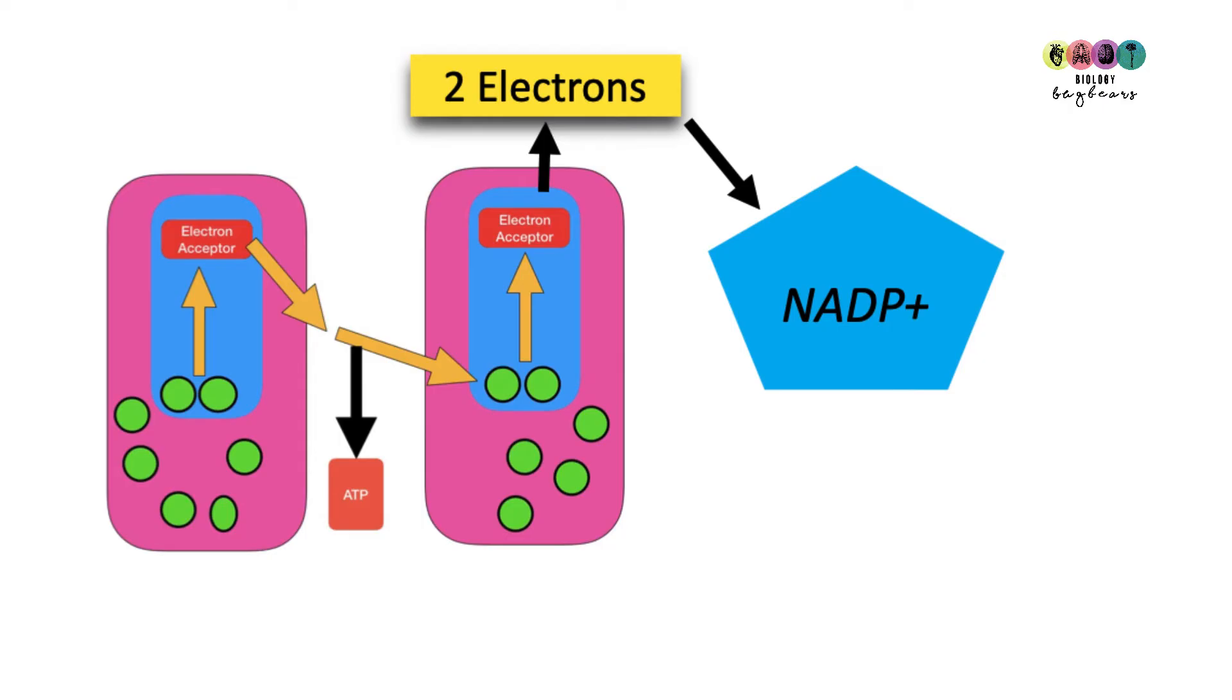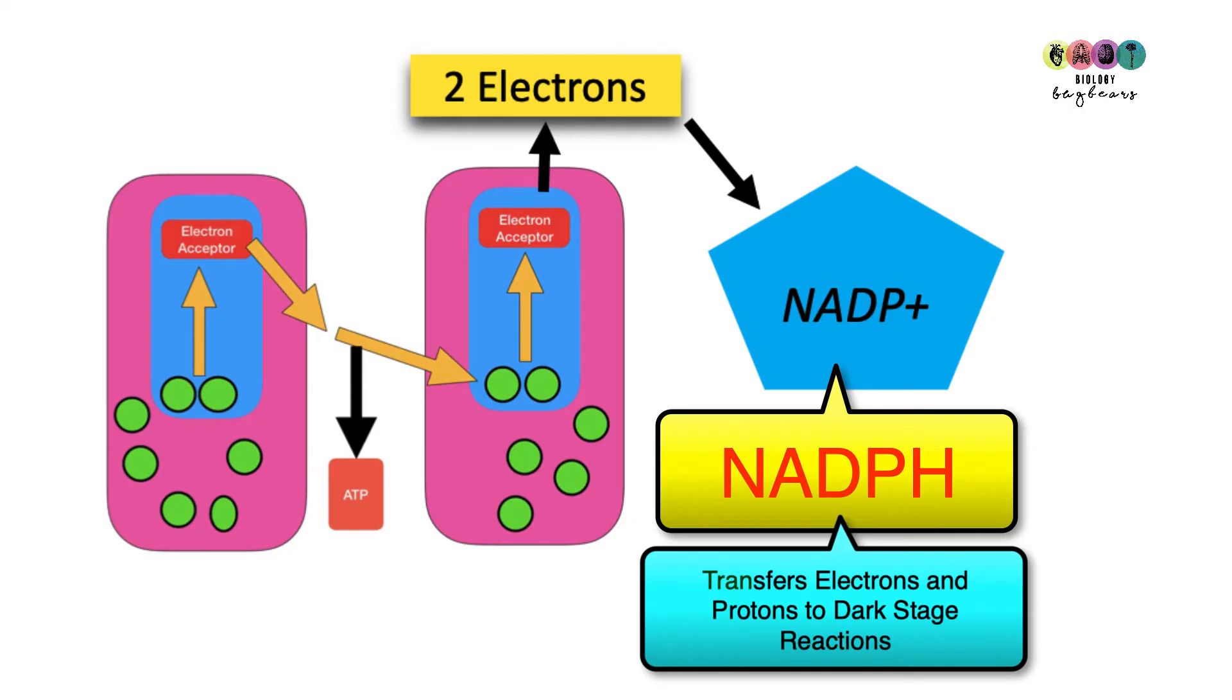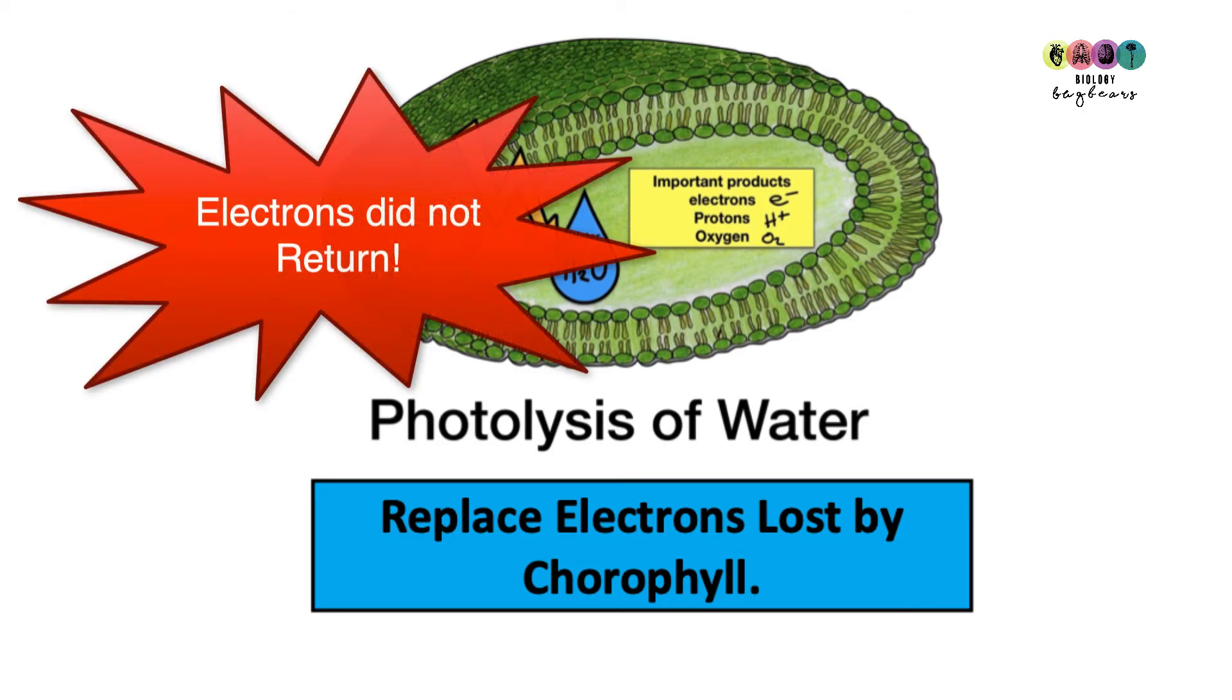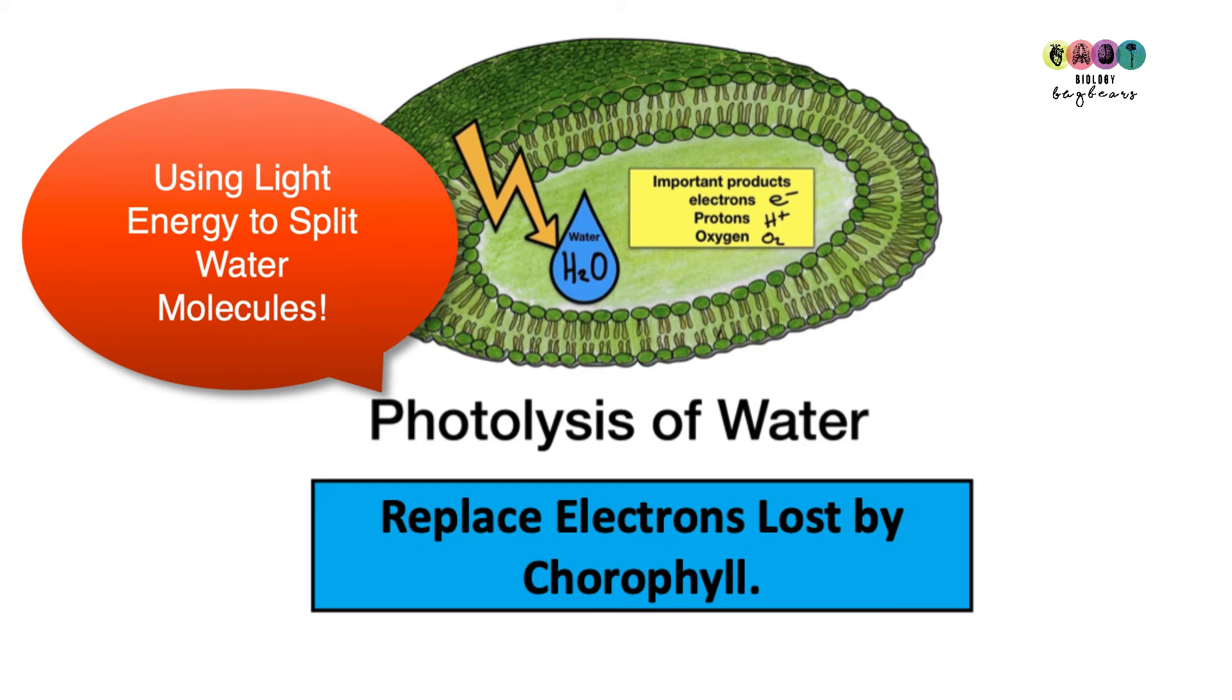Instead, two electrons at a time are going to be trapped by NADP+ to form NADPH, which is going to transfer them to the dark stage reactions. The big thing about the non-cyclic pathway was that the electrons got energized and did not return to chlorophyll. So chlorophyll needs replacement electrons, and these will come from the photolysis of water. This is basically splitting water molecules using light energy.